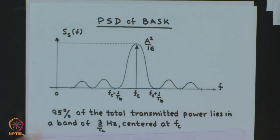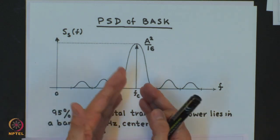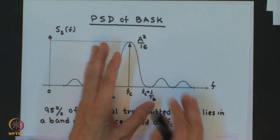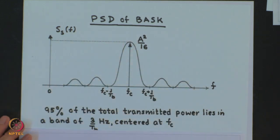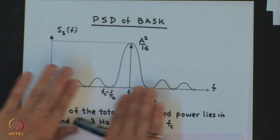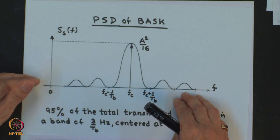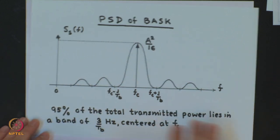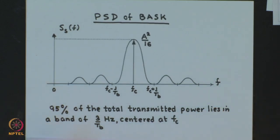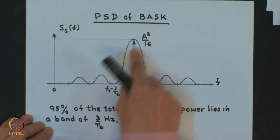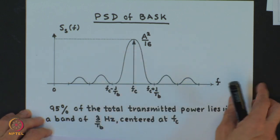It looks like an infinite spectrum. In practice the spectrum extends to infinity on both sides, so the left-hand-side lobes could trickle into the right-hand portion, but since F_C is quite high, by the time the spectrum reaches this side of the axis the lobes would have died down. That is what is meant by neglecting the cross-product term. Calculating, we find that 95 percent of the total transmitted power lies in the band of 3/T_B hertz centered at F_C, which helps us decide the bandwidth of binary ASK.